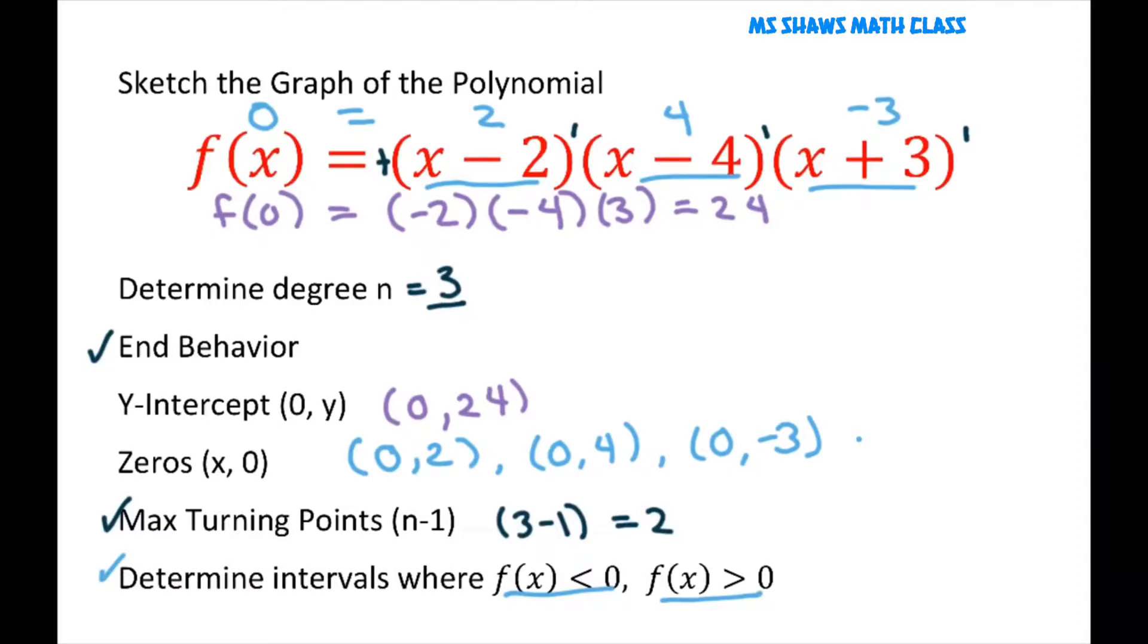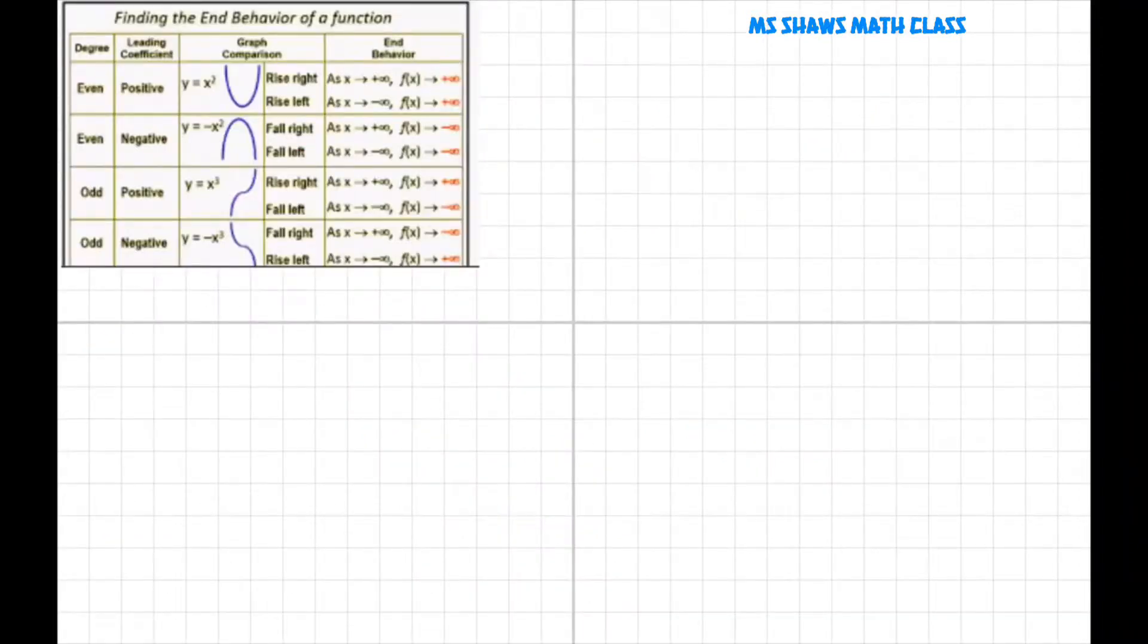So let's talk about end behavior. We have an odd number. Our degree is 3, and our lead coefficient is positive. So this is our end behavior. So all this means is if I graph y equals x cubed, just going to graph it a little bit here. All we're really looking for is when we sketch our graph, we're going to be starting in quadrant 3 and ending in quadrant 1 as we graph from left to right.